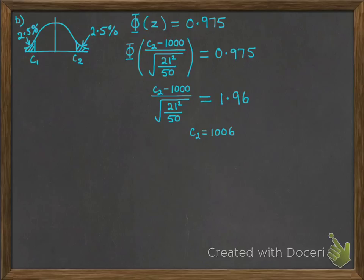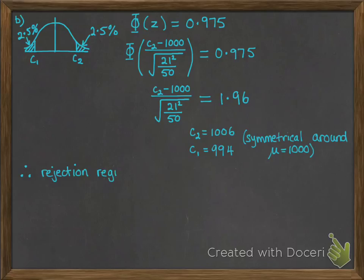Then rearrange that and we get c2 to be 1006. Now we can straight away work out c1 just using the symmetry of the distribution, which gives us 994. So our rejection region is x̄ needing to be less than or equal to 994 and more than or equal to 1006. So if it's outside of those ranges that we've just calculated, it means it's in that 2.5% above or 2.5% below, that would mean we would reject the null hypothesis.